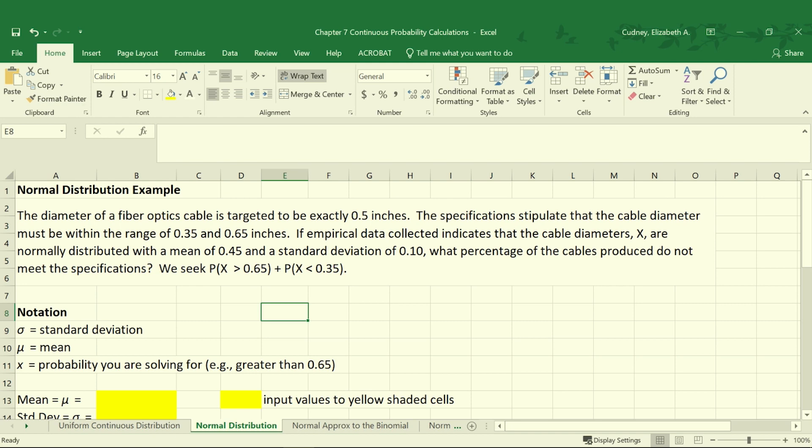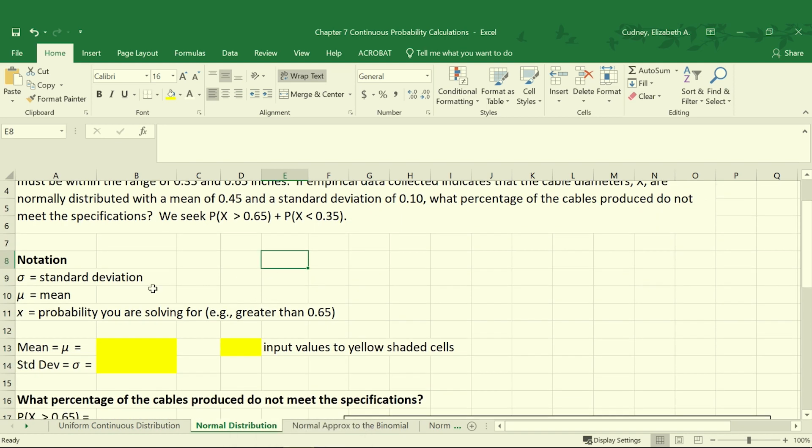Using this information, we can solve for the percentage of cables that are produced that do not meet specifications. Since our specifications are between 0.35 and 0.65, what's outside of our specifications is anything that's greater than 0.65 or less than 0.35. We know our mean and our standard deviation, and we're going to be solving for a certain probability.